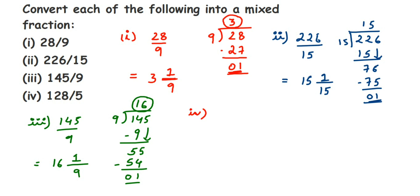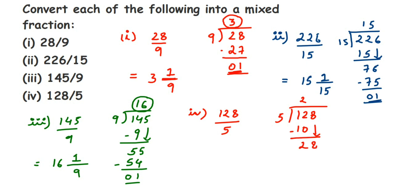The last question: 128 divided by 5. Dividing: 5 times 2 is 10, remainder 2 — drop the 8 to get 28. 5 times 5 is 25, remainder 3. The quotient is 25. Writing as a mixed fraction: denominator is 5, whole number is 25, remainder is 3. So 25 3/5 is the mixed fraction of 128/5.